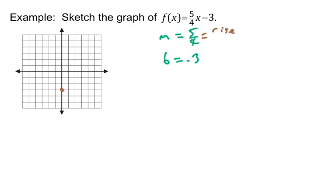So, a rise of 5 means you would count up 5 units from this point. 1, 2, 3, 4, 5. That's a rise of 5. And a run, that's how far you would move horizontally, 4 to the right. 1, 2, 3, 4. Rise of 5, run of 4.